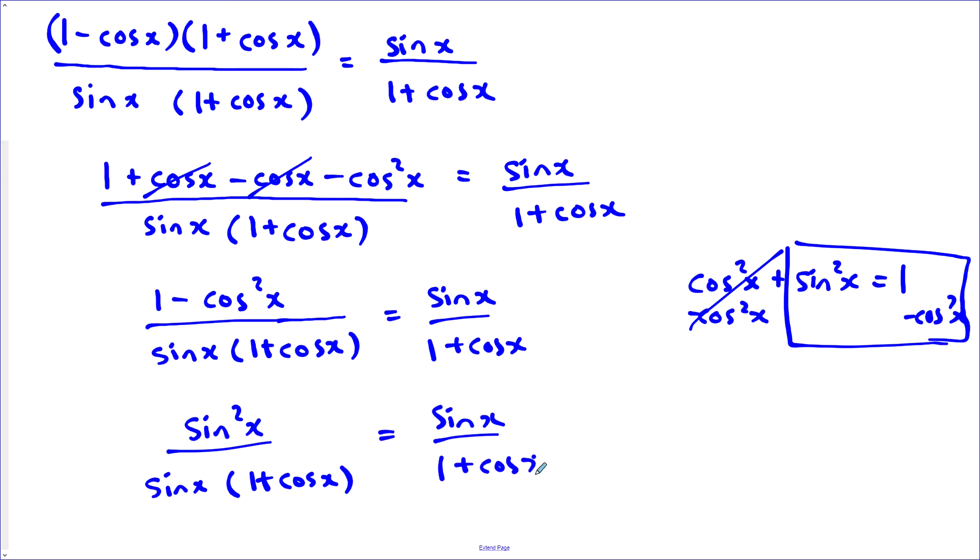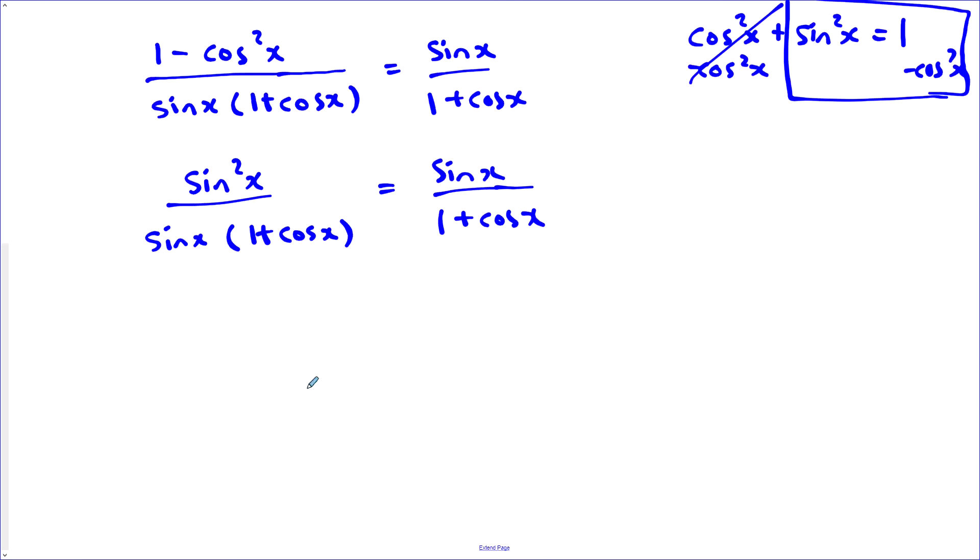Now I can cancel out one of the sines, this sine from the numerator, this one from the denominator. I'm left with the same thing on both sides. Mission accomplished. Proved that this is an identity. Left side equals the right side.